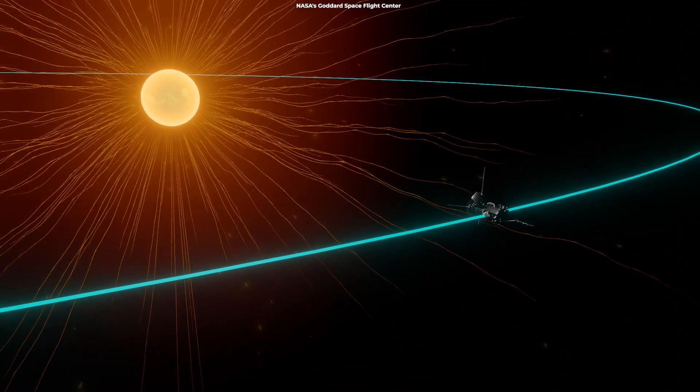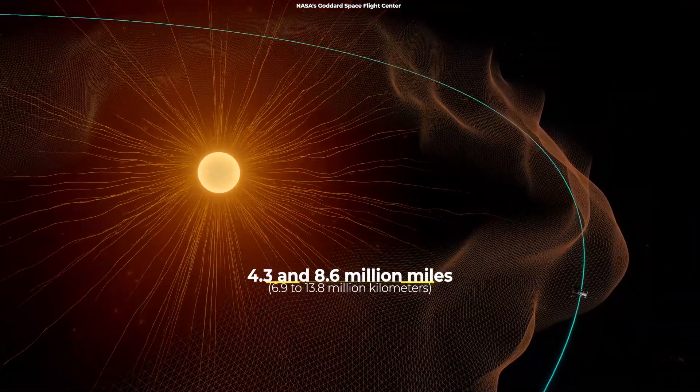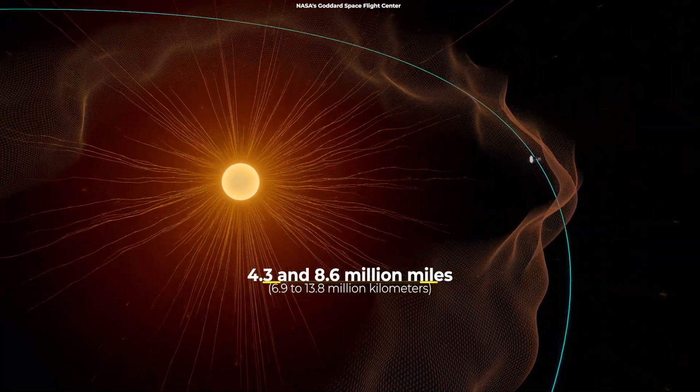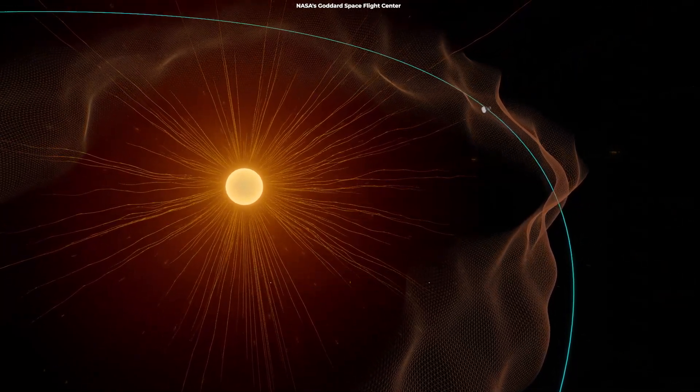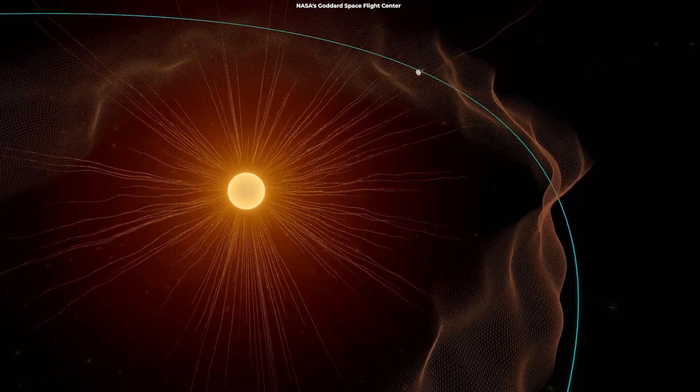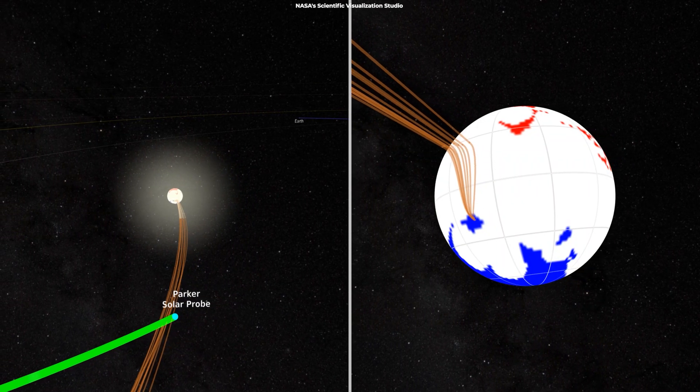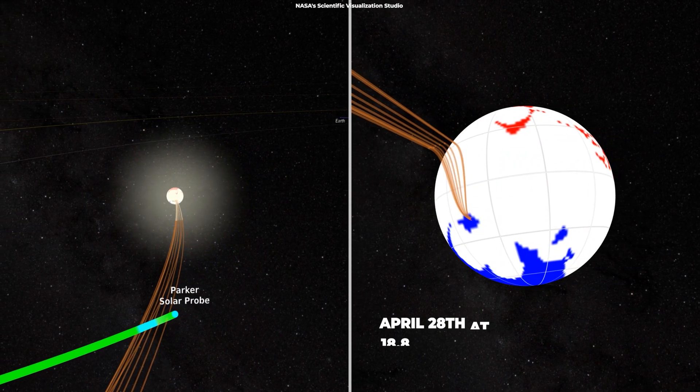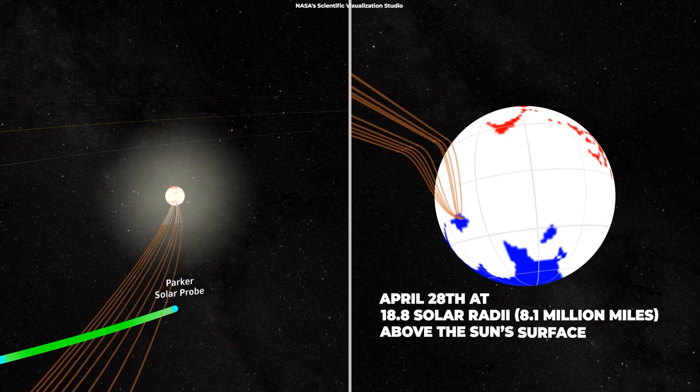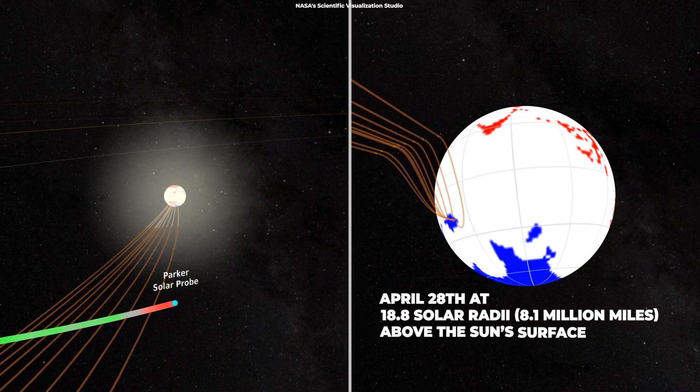Previously, faraway images of the corona revealed that the Alfvén critical surface was between 4.3 and 8.6 million miles, that would be 6.9 to 13.8 million kilometers from the Sun's surface, which is equivalent to 10 to 20 times the radius of the Sun. These estimates were not too far off. According to Parker's data, it crossed the Alfvén critical surface on April 28th at 18.8 solar radii, 8.1 million miles above the Sun's surface, and finally crossed the solar atmosphere.